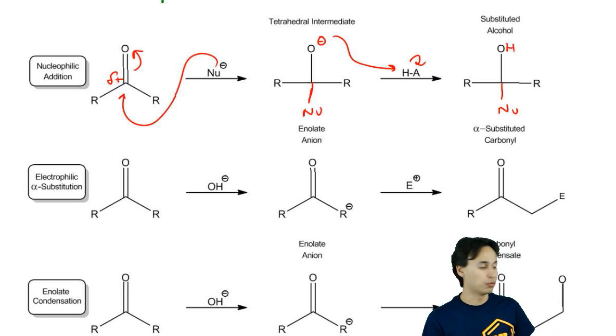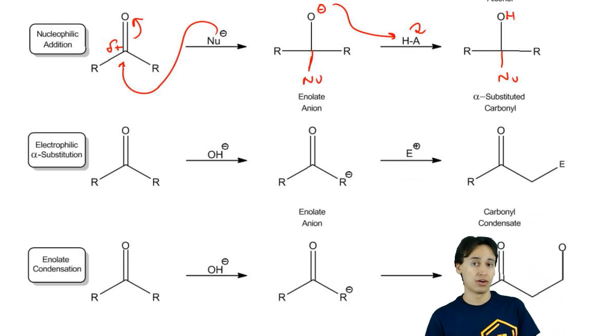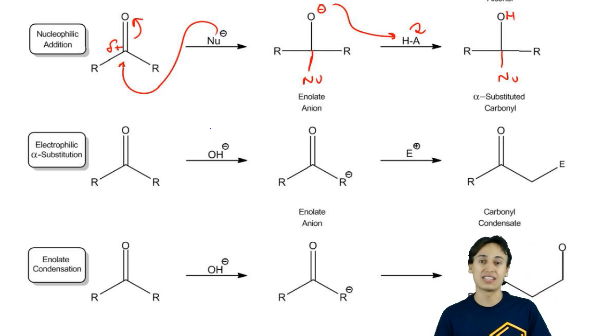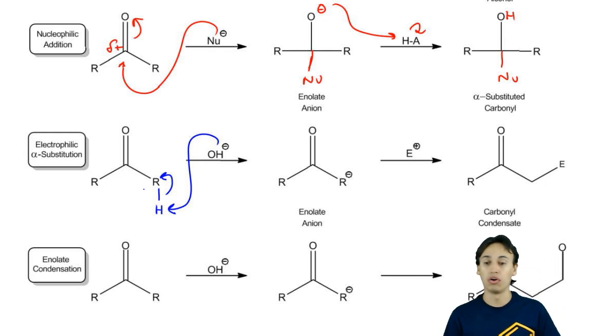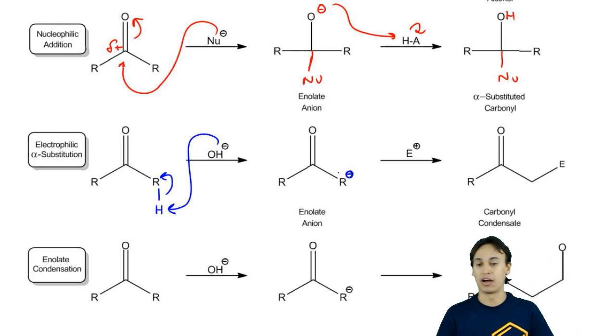More recently, what we've learned is that certain types of nucleophiles, specifically basic ones, are going to react at the alpha carbon and take away a proton. We've noticed that, for example, OH- can remove an alpha proton and make what we call an enolate anion, a negative charge on the alpha carbon.